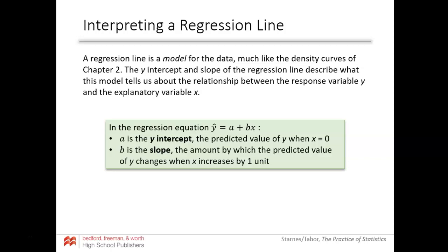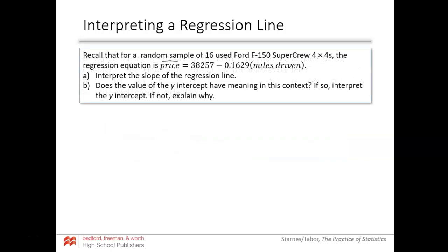The y-intercept a is the beginning value of your data when x equals zero. The slope b is the predicted change in y when x increases by one unit. Our slopes are typically decimals, meaning their denominator is always one. For the Ford F-150 problem, let's interpret the slope and determine whether the y-intercept has meaning in context. The slope is negative 0.1629, which is in front of the explanatory variable miles driven.